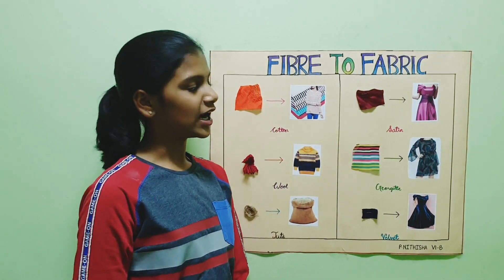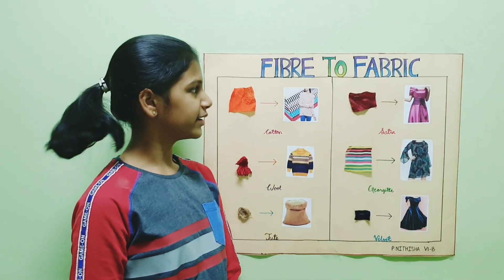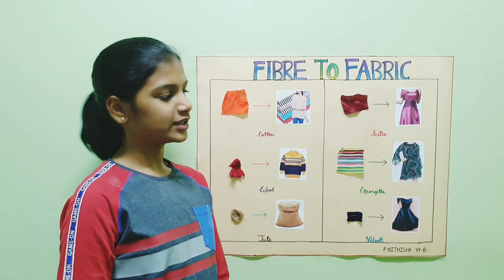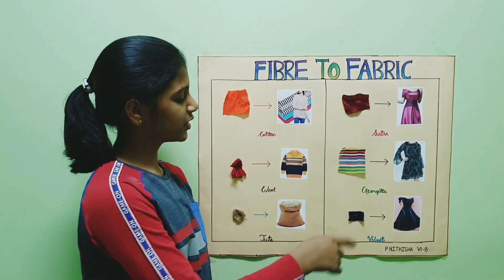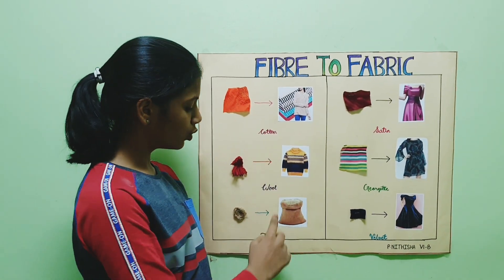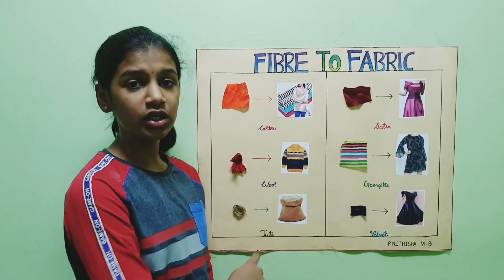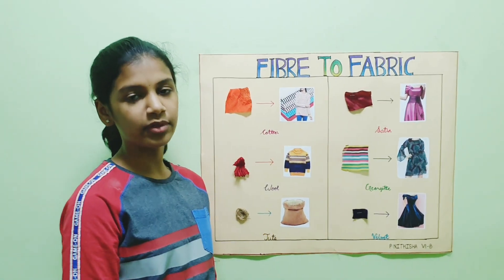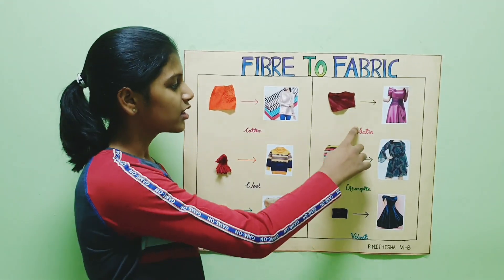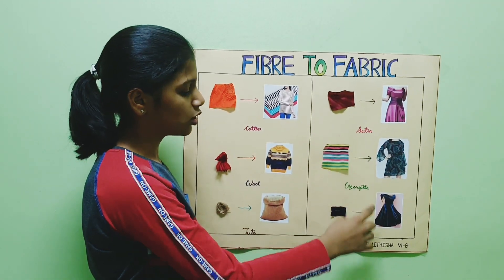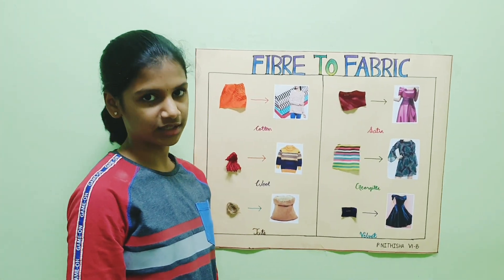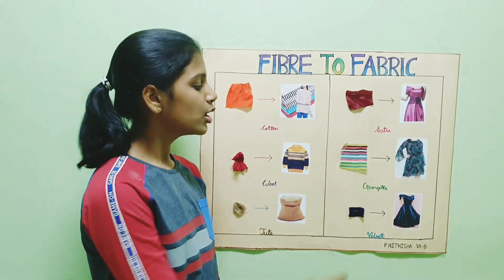I have made a chart on fiber to fabric. So here are some examples. Cotton, wool, and jute are examples of natural fibers. Satin, georgette, and velvet are examples of synthetic fibers.